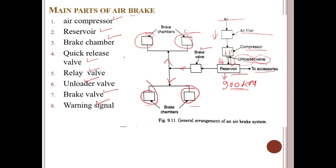When brakes are applied, the air pressure in the reservoir decreases. When the pressure drops to approximately 700 kilo Pascals, the governor again connects the compressor to the system. If the air system pressure falls to about 400 kilo Pascals, a warning in the form of a buzzer is sounded. The main components will be discussed in the following sections.